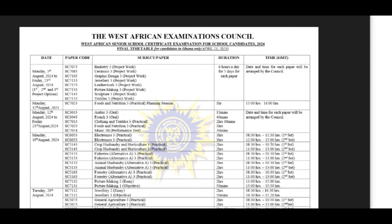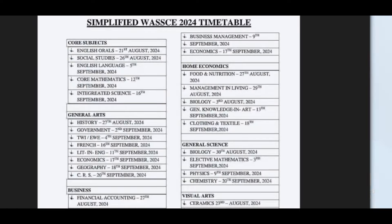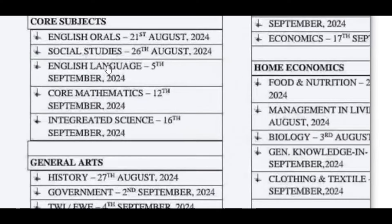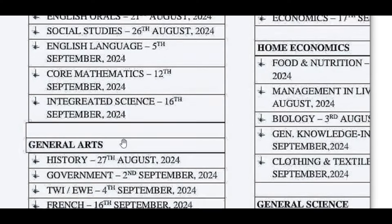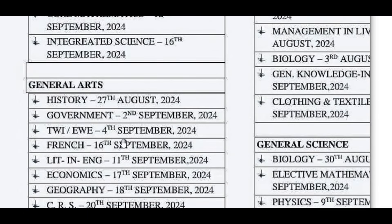Let's retrieve the simplified WASSCE 2024 timetable that has been created for you. For core subjects: English Orals — 21st August 2024; Social Studies — 26th August 2024; English Language — 5th September 2024.